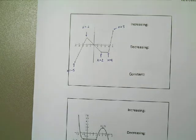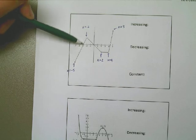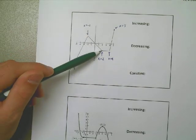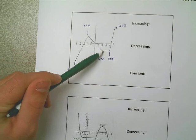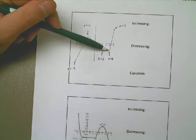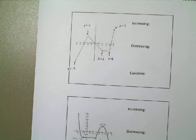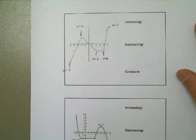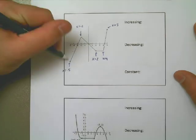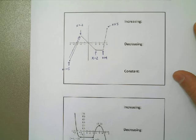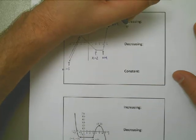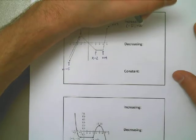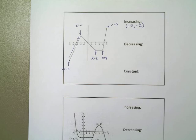Notice what I've basically done is pointed out all the spots where I've gone from an upward graph to a downward graph, from a downward graph to a horizontal graph, and from the horizontal piece to the upward piece. I really have 4 different sections. Out of those 4 sections, the first one looks like it has a positive slope. So from negative 5 to negative 2, I am increasing. I'm going to write that in interval notation: from negative 5 to negative 2, my function is increasing.